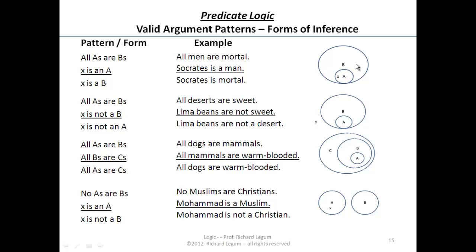There are a couple of ways to remember this: you can use the example, or the Venn diagram. A third way is to read it left to right. All A's are B's — if the second premise tells us X is an A, we're going in the positive direction, and we can conclude X is a B.